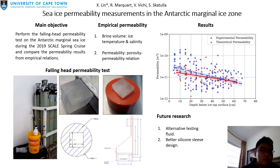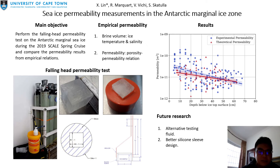The experimental permeability is calculated from the height difference of the kerosene and the areas of the ice sample and pipe. On the 2019 spring cruise, both empirical and experimental permeability tests were conducted on the same consolidated pack ice.